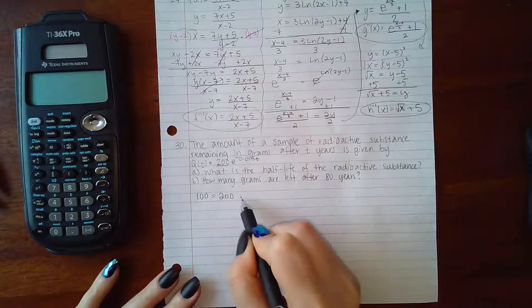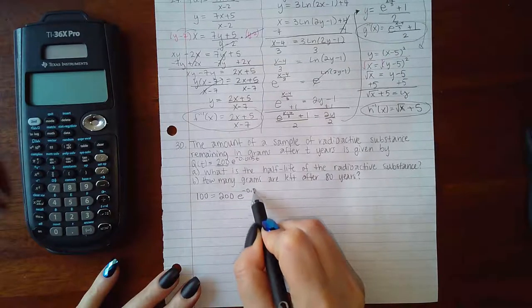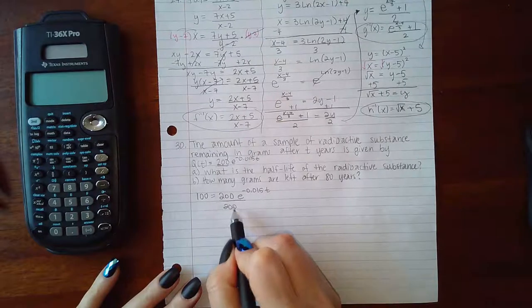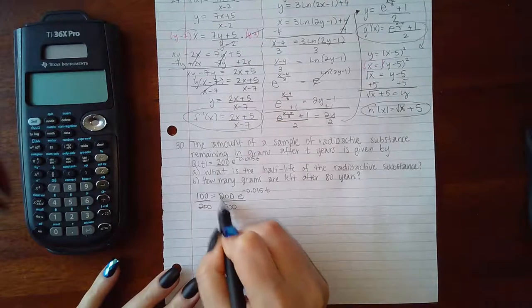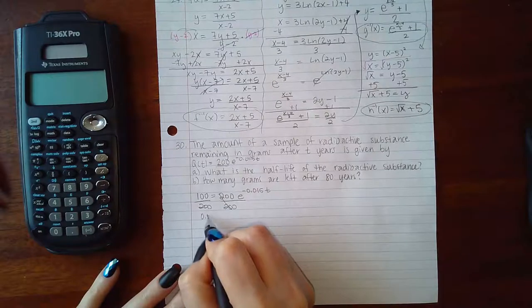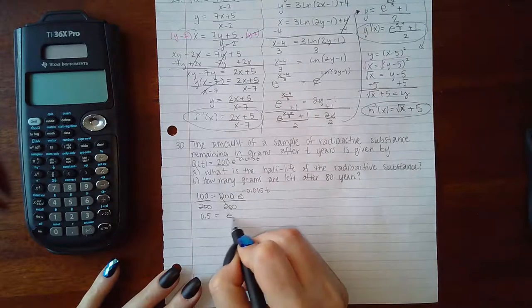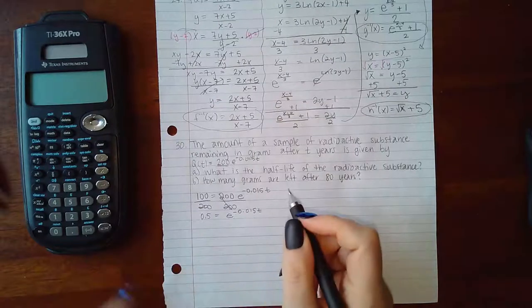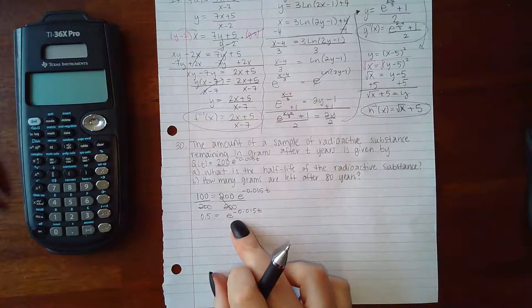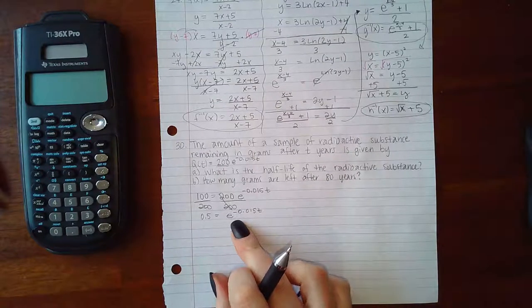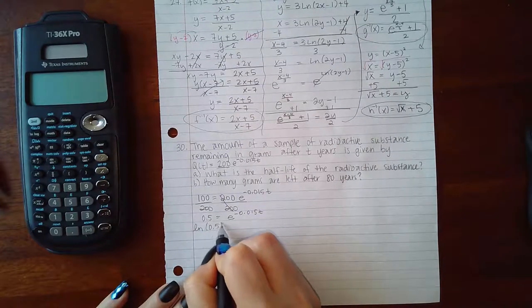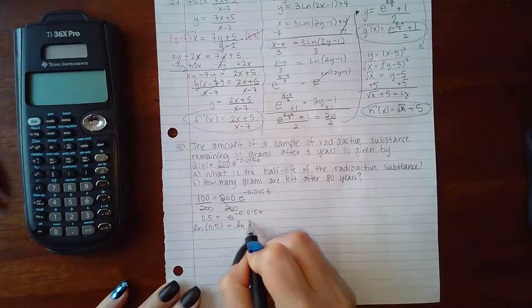So how long does it take for this to reach 100? So divide by your coefficient and we get 0.5, or one-half, equals e to the negative 0.015t. How do we get rid of an exponential function? We apply a logarithm with the same base. So the logarithm with base e is ln, so I'm going to apply the ln on both sides.